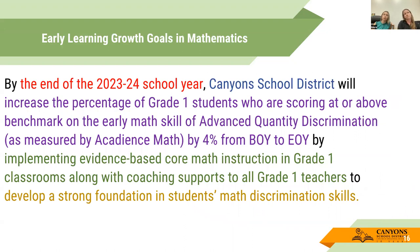Our early learning growth goals — we are accountable this year to the state of Utah for these goals. For first grade students, we need an increase of students scoring at or above benchmark on Advanced Quantity Discrimination (AQD) by 4% from the beginning to the end of the year. Even if you're not a first grade teacher, this matters because AQD is highly predictive — students who reach benchmark on AQD have a higher likelihood of accessing later mathematics, as it is the basis of all place value.